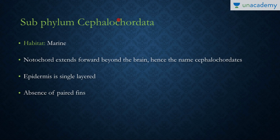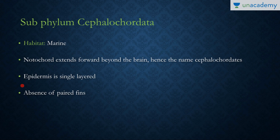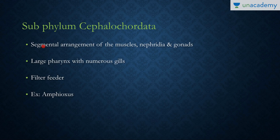Next is Subphylum Cephalochordata. 'Cephalus' means head, and 'chordata' refers to organisms having a notochord. In adults, the notochord extends forward beyond the brain into the cephalic region — hence the name Cephalochordata. The habitat is marine. The epidermis is a single layer — the dermis is absent — and paired fins are absent. There is segmental arrangement of muscles, nephridia, and gonads, indicating metameric segmentation. They have a large pharynx with numerous gill slits and are filter feeders. The example is Amphioxus, also called Lancelet.